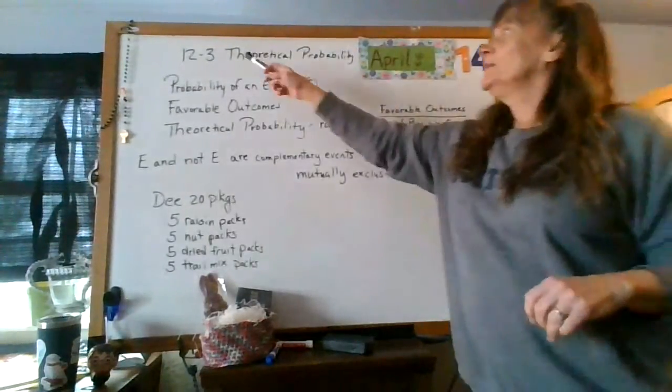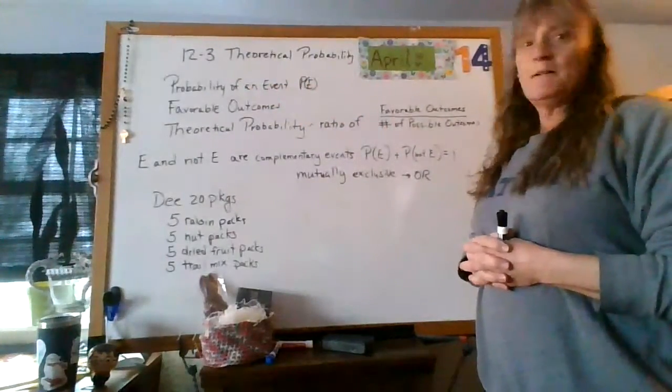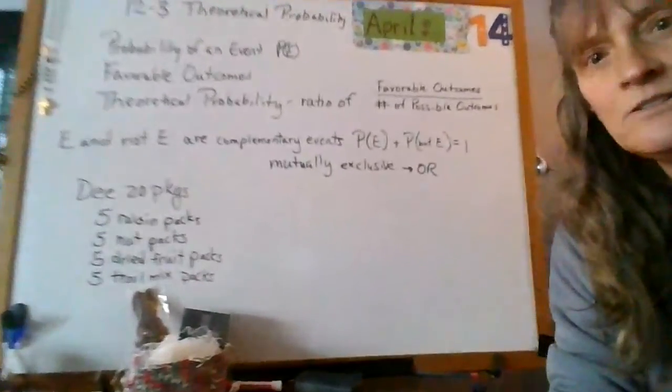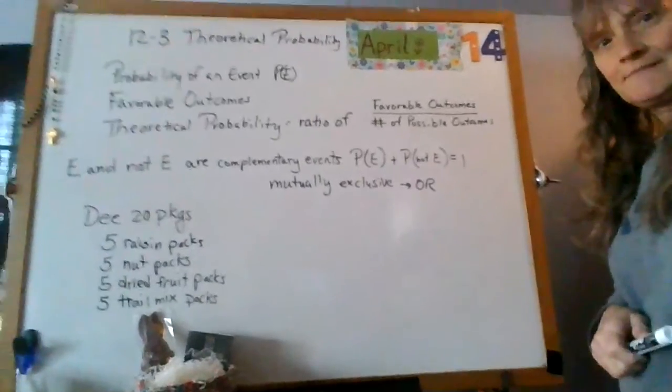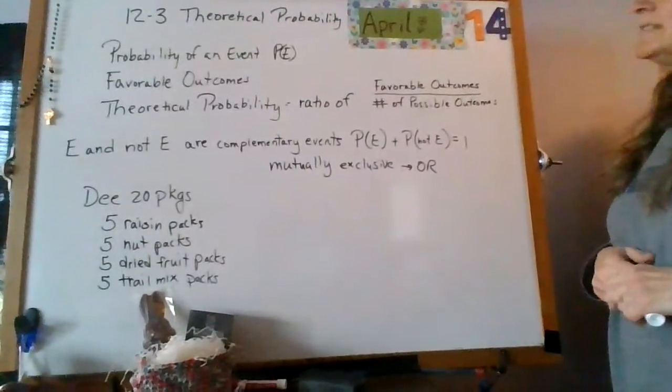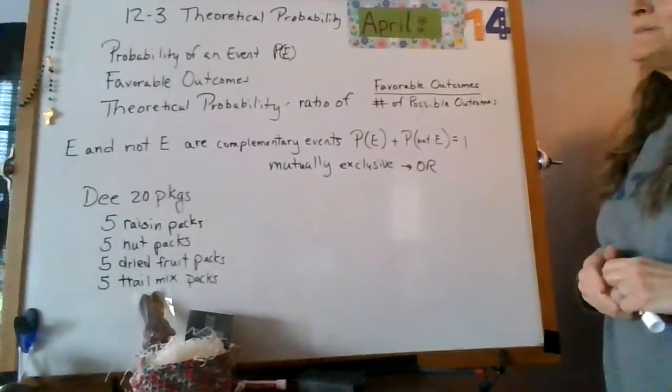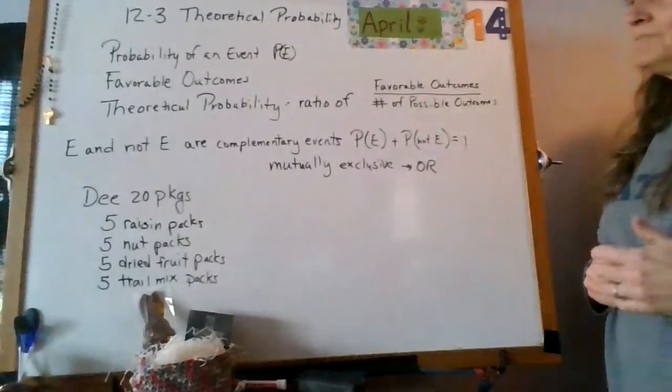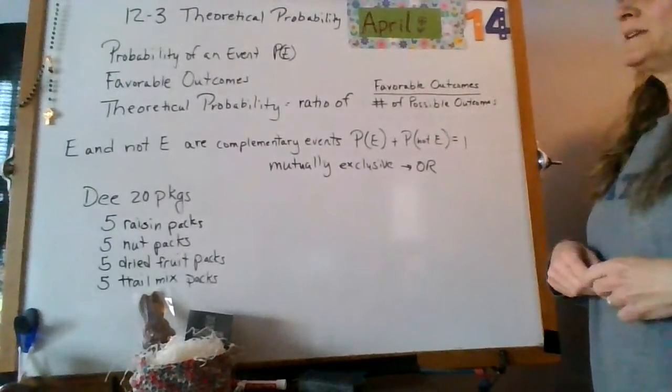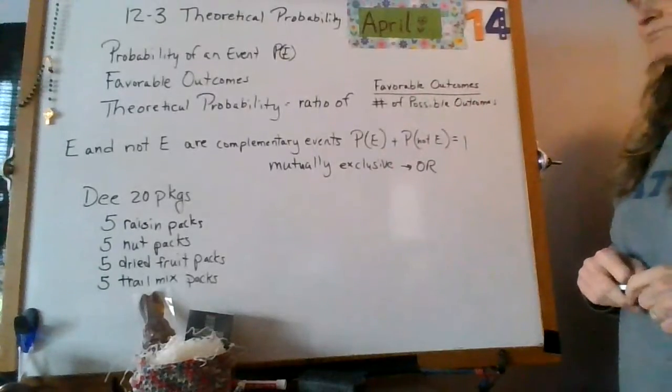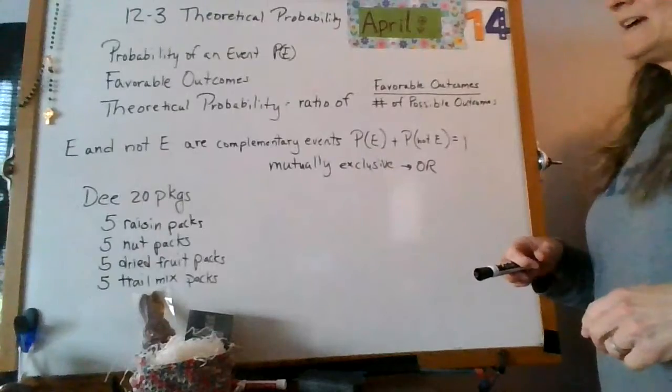So we are doing 12-3 theoretical probability, and I'm going to move this close. If you need to take some time and pause this and copy down the notes, then please do that. I'm going to go a little, not super fast, but you probably need to get this stuff down. So pause it, write it down, and we'll come back.